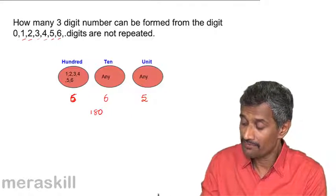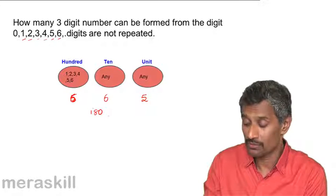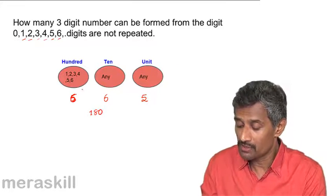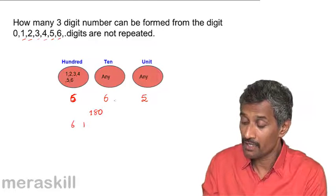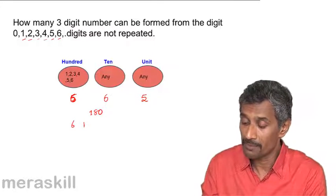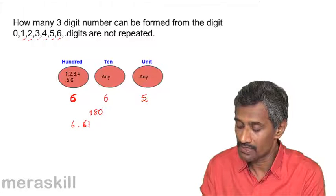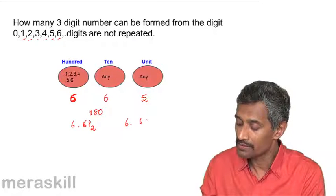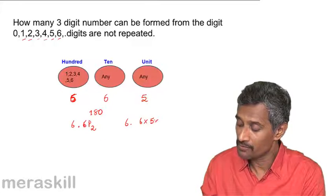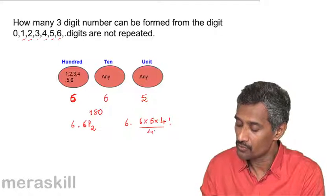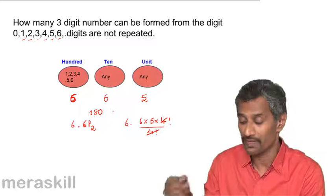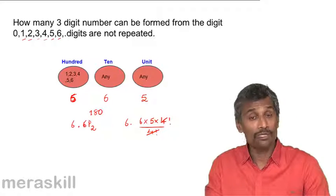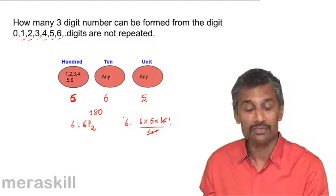Alternatively, the first digit is chosen in 6 ways, and the remaining two digits are chosen from the remaining 6 using permutation notation: 6 × ⁶P₂ = 6 × (6!/4!) = 6 × 6 × 5 = 180. Both methods give the same answer.